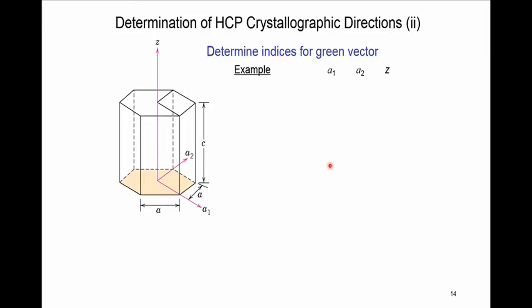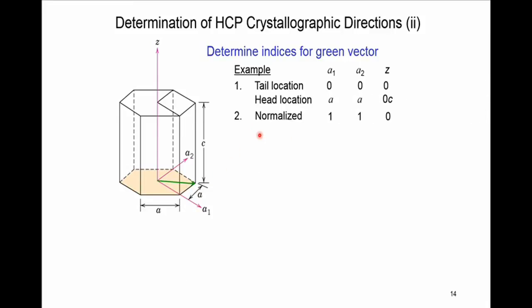Now let's solve an example. We want to find the hexagonal crystallographic direction for the green vector shown, going from the origin to a given point. The first step is to determine the coordinates for the vector head and tail. For the origin we have (0, 0, 0). Projecting the head point along A1 gives a value of 1 unit, equal to a, and projecting along A2 gives the same value, a.